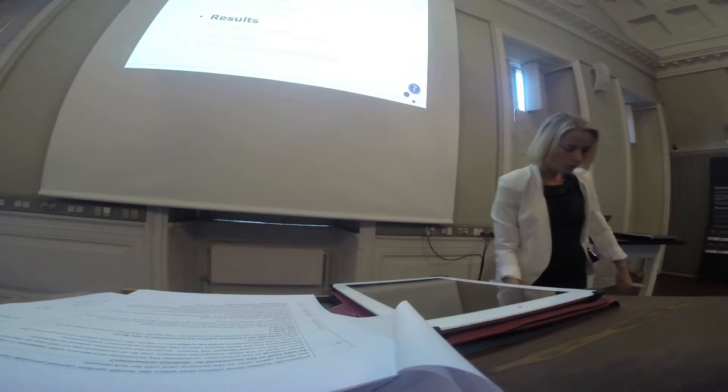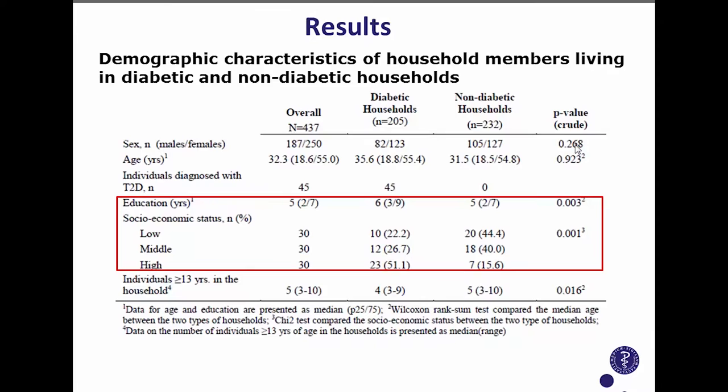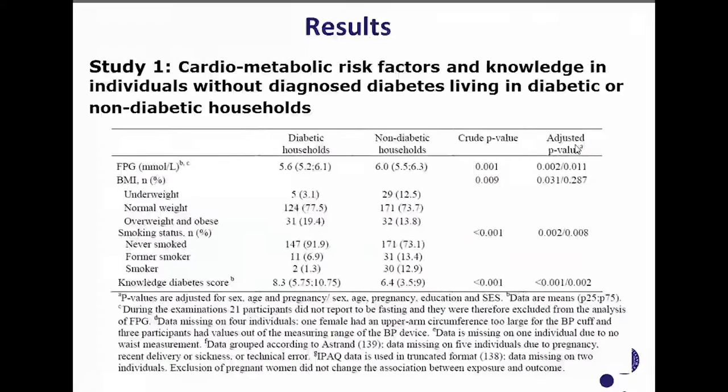These are the overall characteristics of household members living in diabetic and non-diabetic households. They didn't differ in sex ratio or age, but we saw a higher level of education and higher socioeconomic status in the diabetic households.